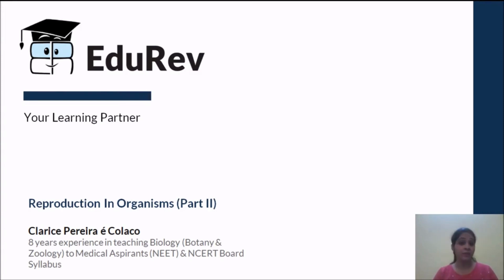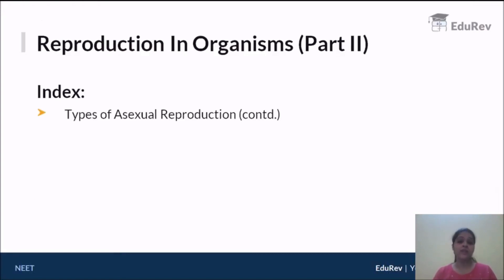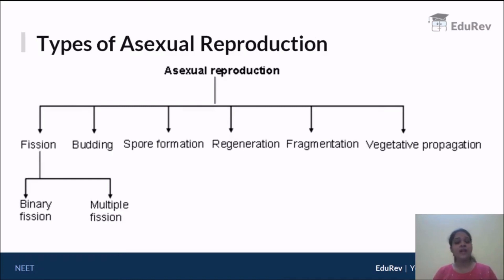This will be the second class on reproduction in organisms. In the previous video lecture, we already studied some asexual reproduction types, and today we will continue studying the remaining types. In the last class, we finished fission, budding, regeneration, and fragmentation. Today we will complete sporulation and vegetative propagation, as well as parthenogenesis.